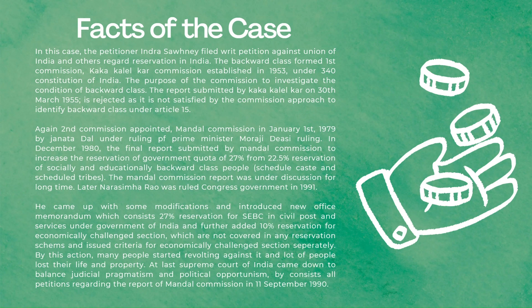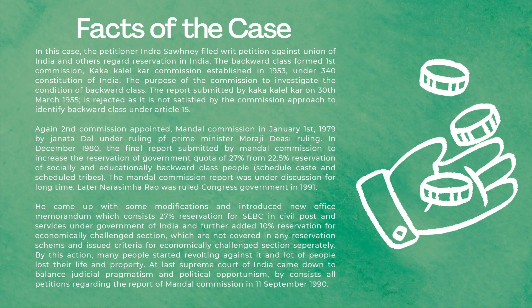After about 10-15 years, the second commission — named the Mandal Commission — was formed in the year 1979. It was headed under the ruling prime minister of Janata Dal. The Mandal Commission submitted its report recommending a reservation quota increase: the earlier 22.5% for Scheduled Castes and Scheduled Tribes was to be supplemented by 27% for OBCs.